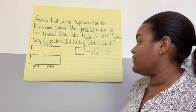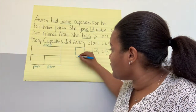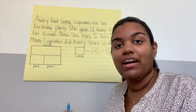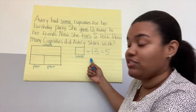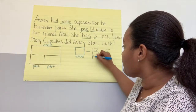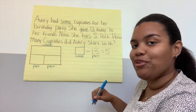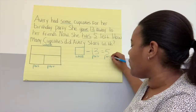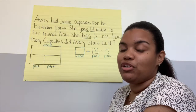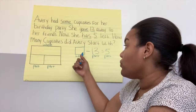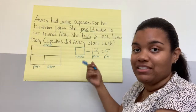Now, what should we label this? Good — this is our whole. How do we know that's our whole? Yes, it's what we started with. What is the 13? That's our part. And then what is the five? You are correct — that is also our part. Because we know that part plus part equals a whole, right? So this has to be a part and that has to be a part, because we need to see what that's going to be equal to.